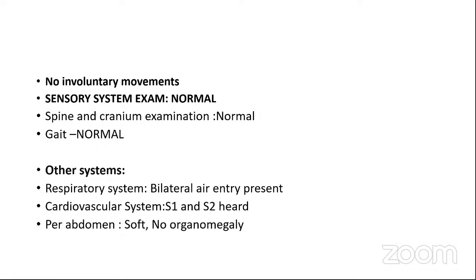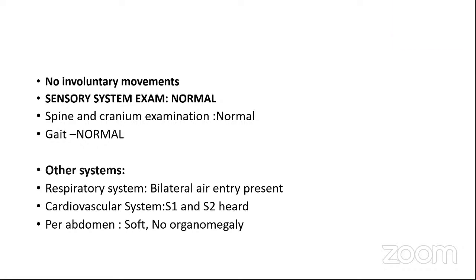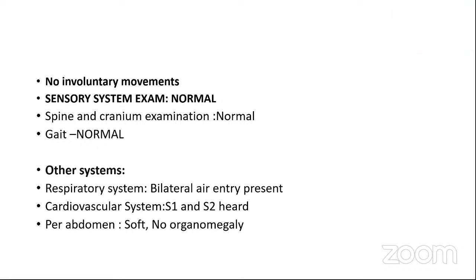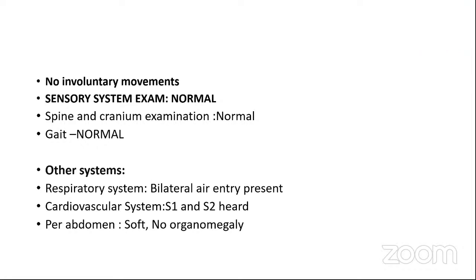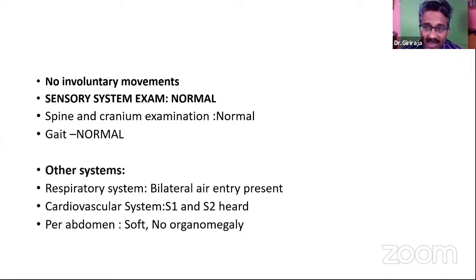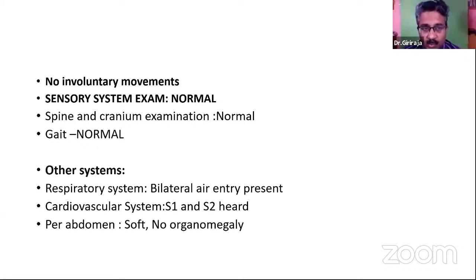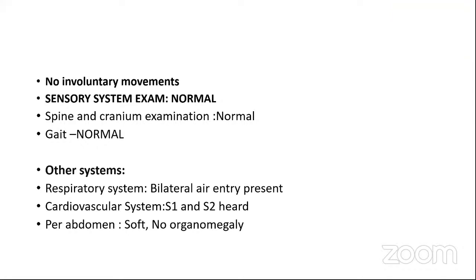Differential diagnosis elimination from periphery to center. Channelopathy: ruled out because it requires relapsing-remitting multiple attacks, and reflexes would be sluggish to absent during attacks. Neuromuscular junction disorder: ruled out by history — no diurnal variation, no cranial involvement; reflexes are preserved in both conditions. Guillain-Barré syndrome (anterior root): ruled out because universal areflexia is characteristic, which is absent here.